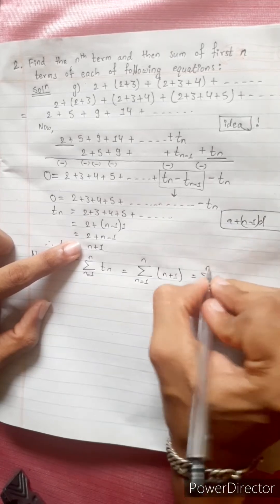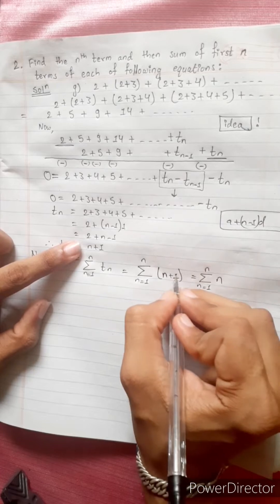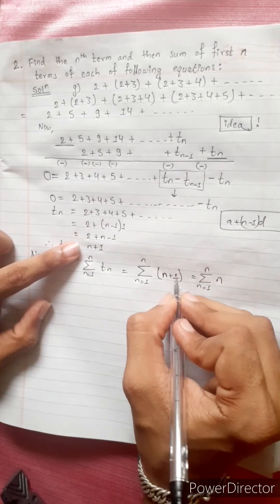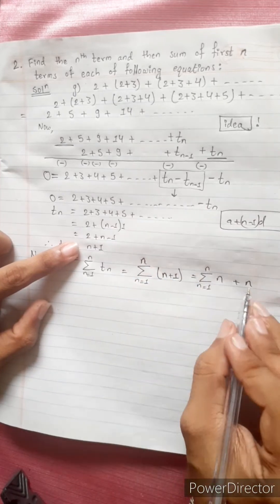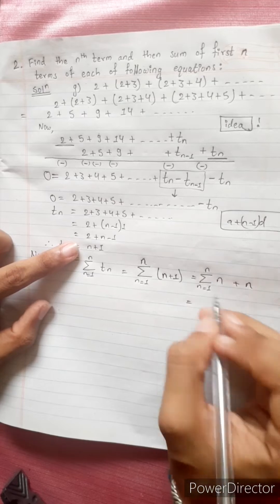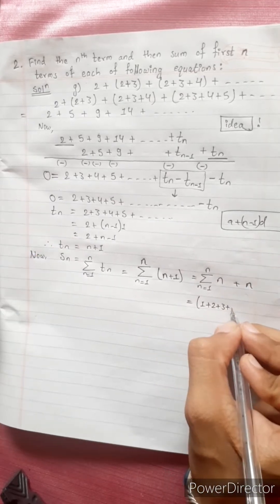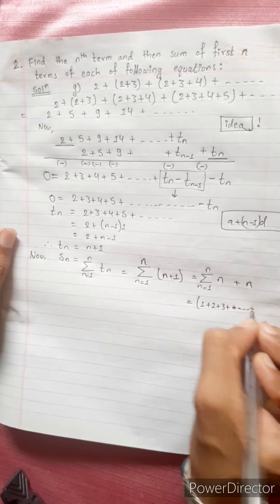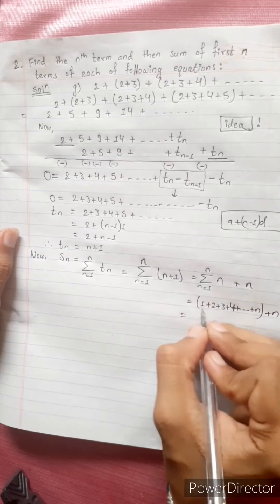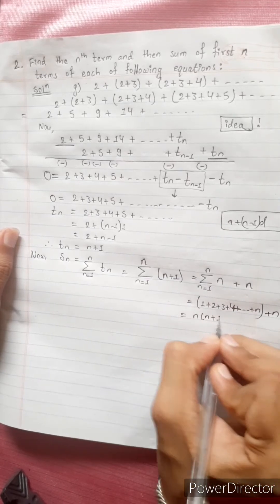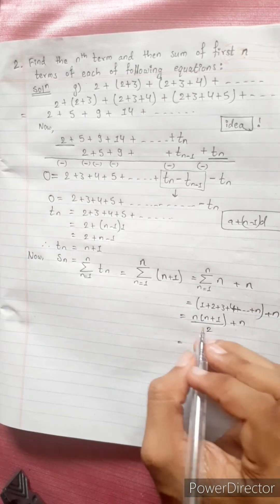The summation of T_n from 1 up to n: here n is a constant number, so it's like summing a variable. The summation of (n plus 1) from 1 to n equals summation of n plus summation of 1. The summation of 1 from 1 to n equals n directly. This gives us 1 plus 2 plus 3 plus dot dot dot plus n, which equals the formula n(n+1)/2, plus n.